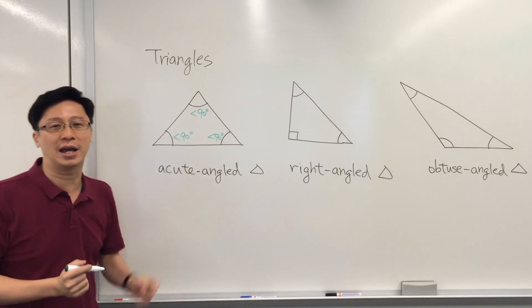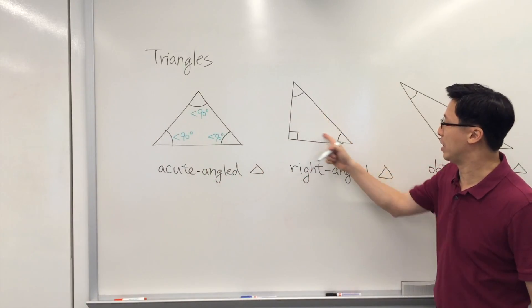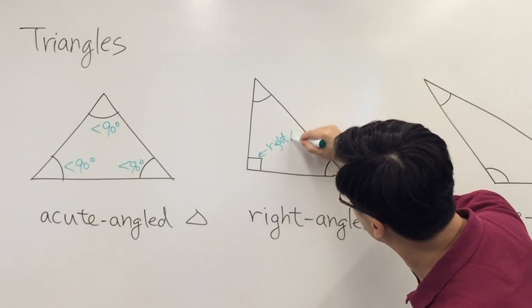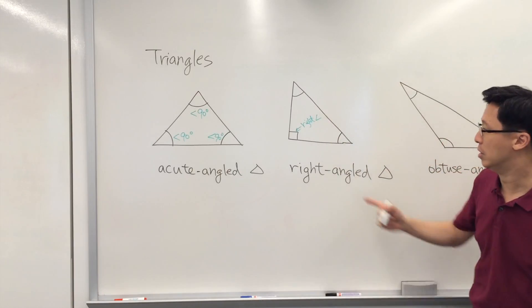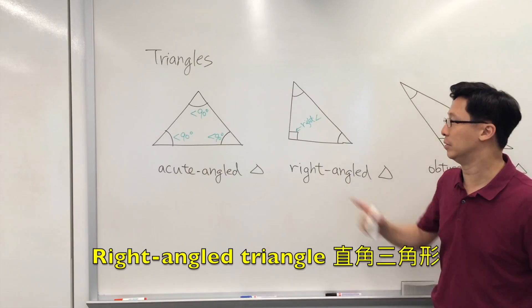This is why it has the name acute-angled triangle. For this one with three angles, one of the angles is a right angle—it is a 90-degree angle—so we call this a right-angled triangle.